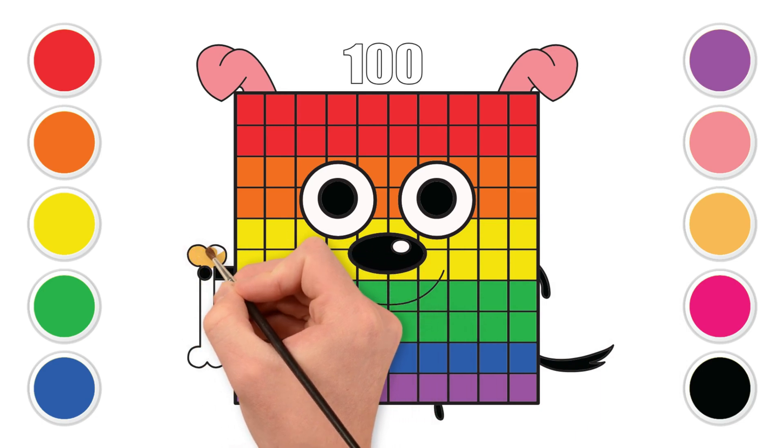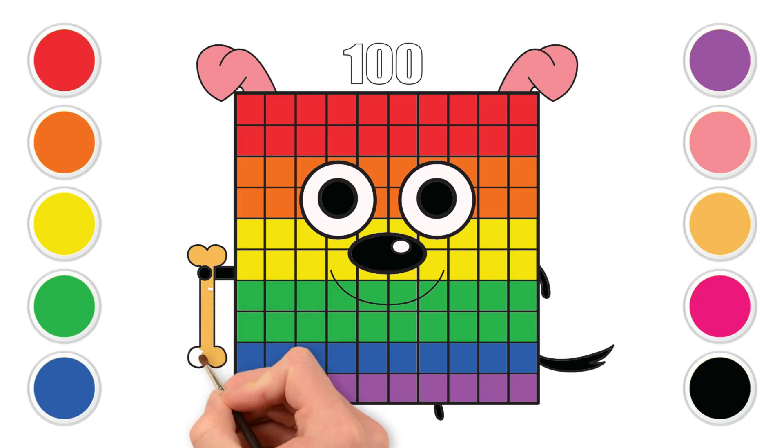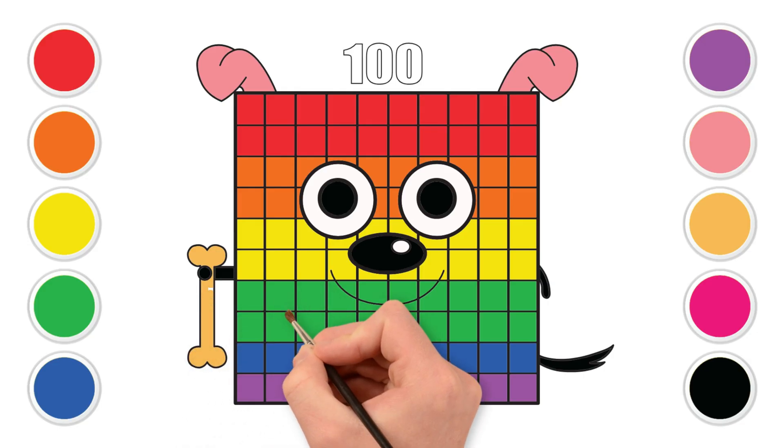I'm a rainbow dog made of one hundred squares. That's ten groups of ten. At the top, color the number one hundred with colors shining bright.